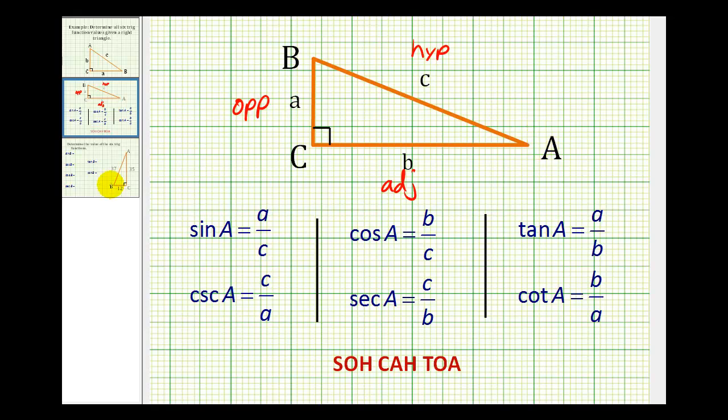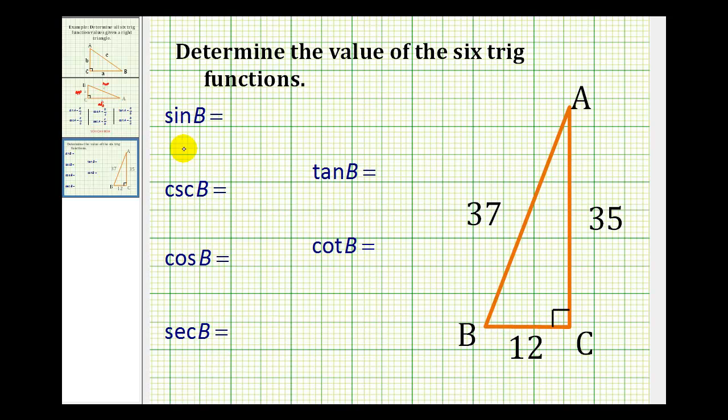Okay, let's take a look at our example. Here all of these trig functions refer to angle B, so here's our angle B. So the opposite side has length of 35. This side here is opposite the right angle, so the hypotenuse has length 37 units, and the adjacent side of angle B has a length of 12 units.